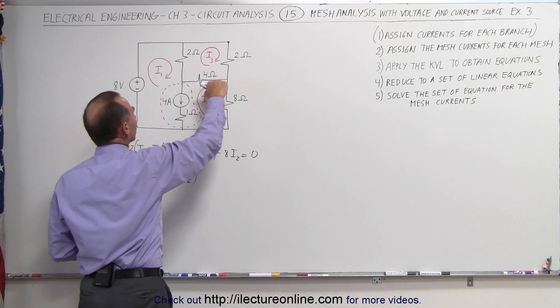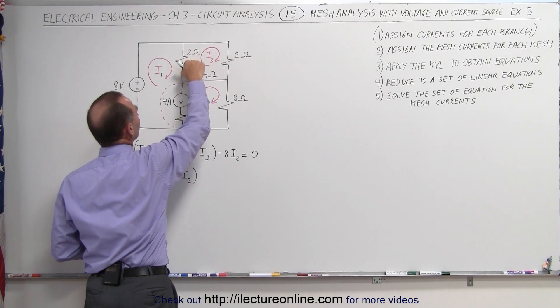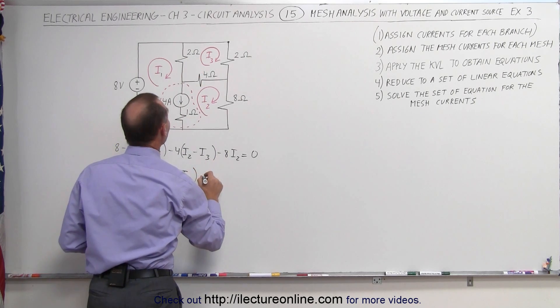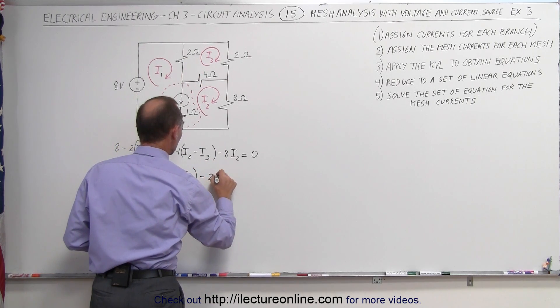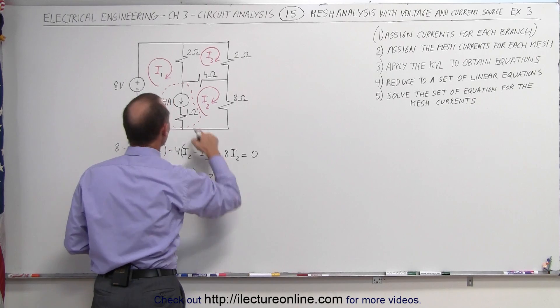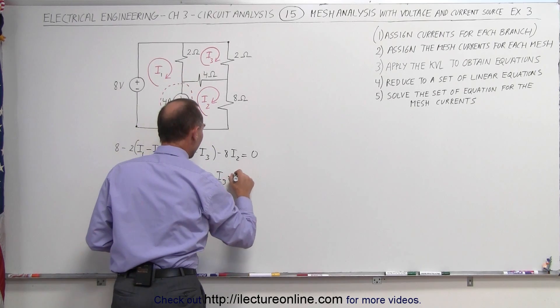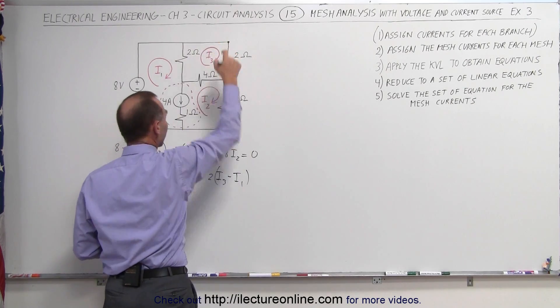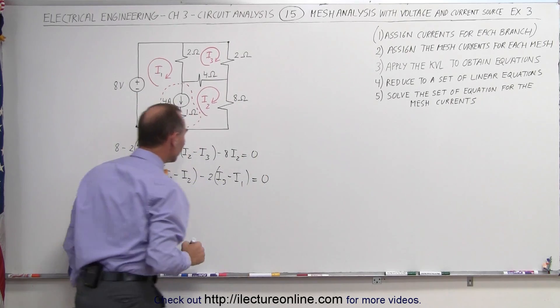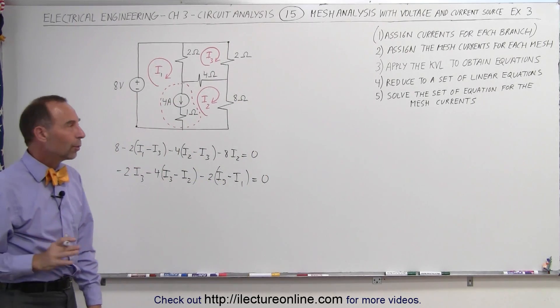Minus 4 times the minus I2 gives us a plus 4I2. Coming around here, we have a voltage drop relative to I3, minus 2I3, but we have a voltage rise relative to I1, minus I1. And then we get all the way around, and that must add up to 0. There's the two equations.